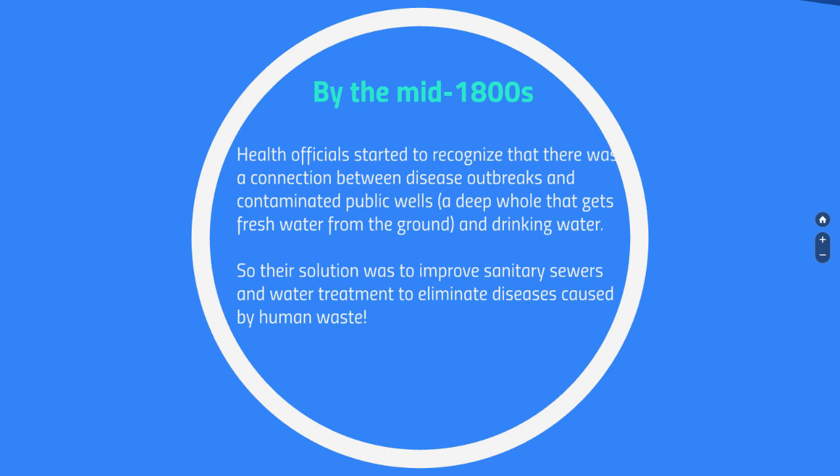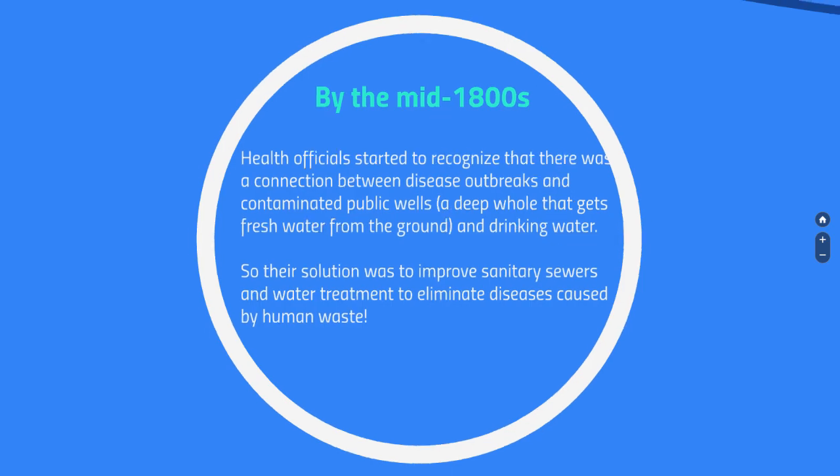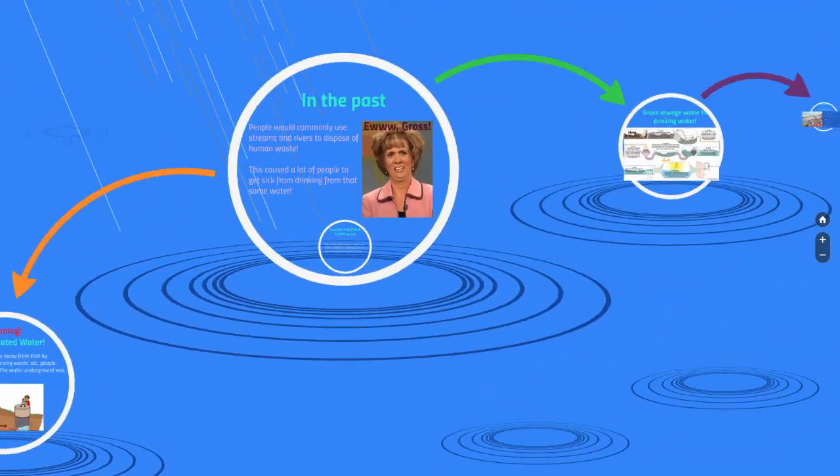By the mid-1800s, health officials started to recognize a connection between disease outbreaks and contaminated public wells — those deep holes dug underground to get fresh water. Their solution was to improve the sanitary sewer system, where water would get treated, and that treated water would eliminate any diseases caused by human waste. This is basically what we use today.